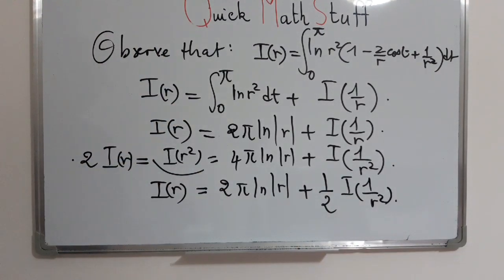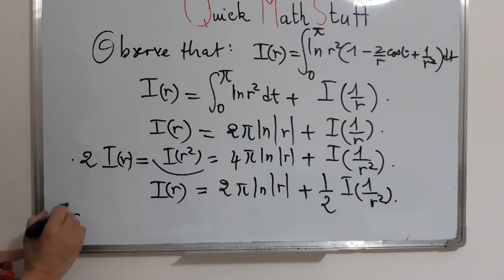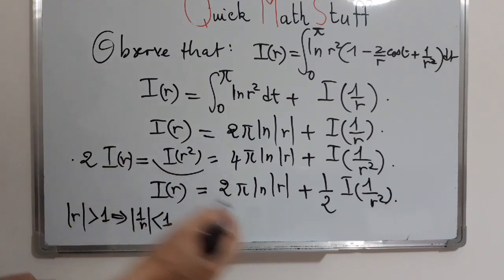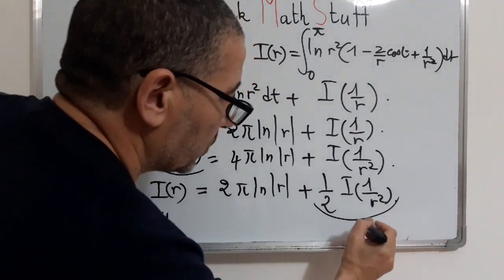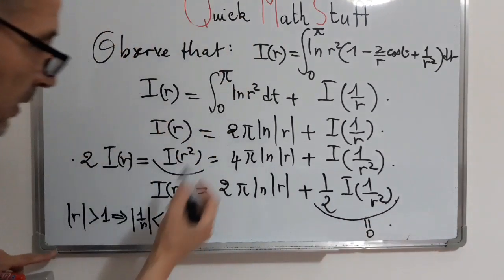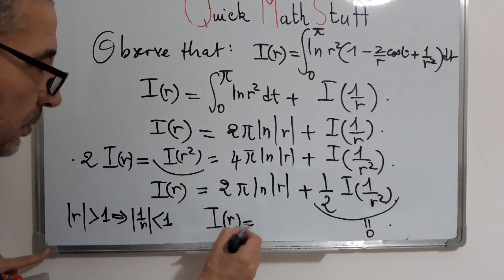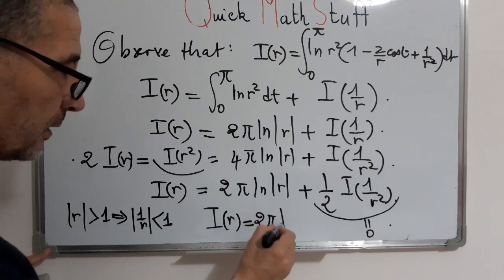We conclude easily: if r is in this interval, if absolute value of r is greater than 1, this implies that 1 over r squared will be in the interval less than 1, so this number will be equal to 0. And in conclusion, I of r will be equal to π ln of absolute value of r.